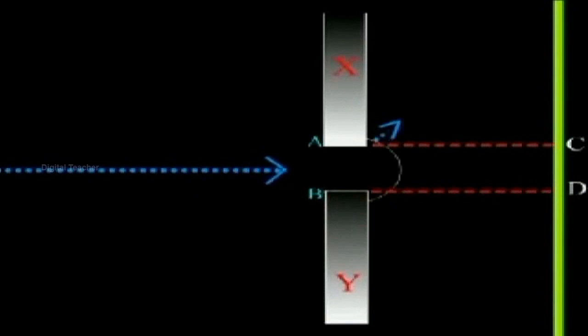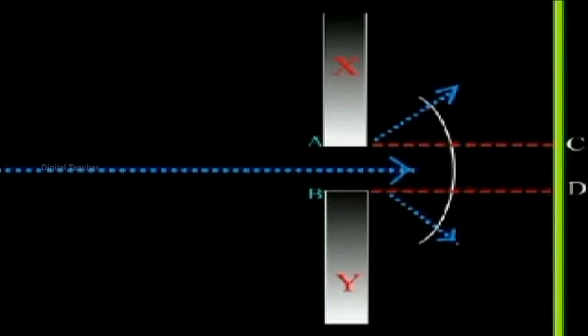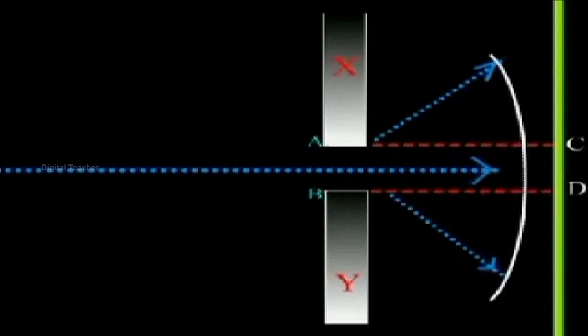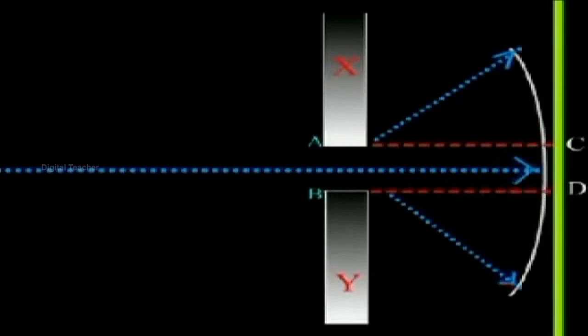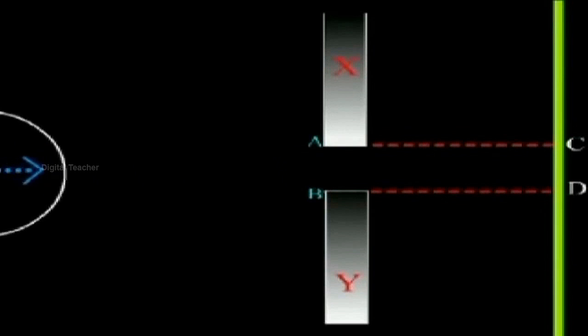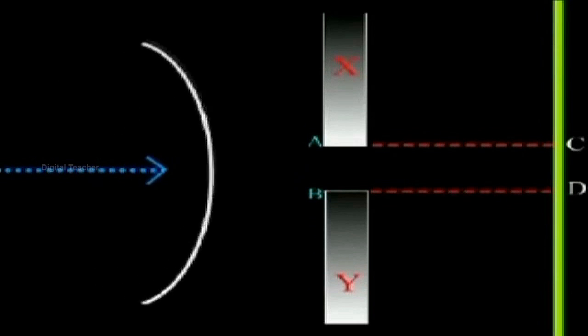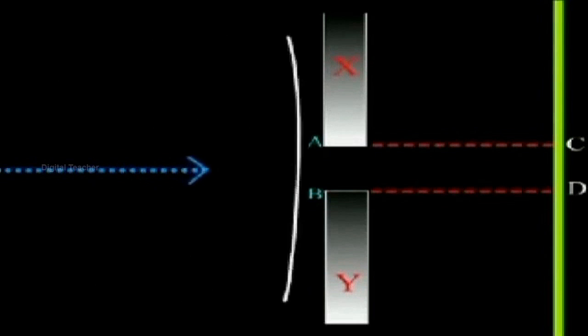Then a plane wave front would be incident on AB where the edges A and B act as obstacles. Any opening such as AB is called an aperture. The portion of wave front incident on AB escapes through the aperture and results in a number of circular wave fronts which spread out in all directions as if they have originated through the aperture AB.